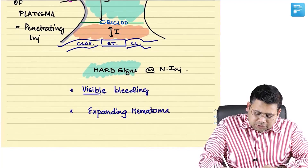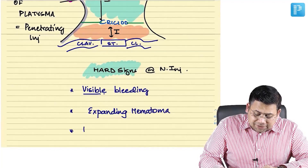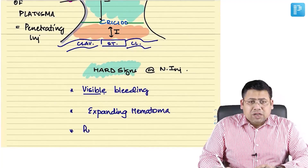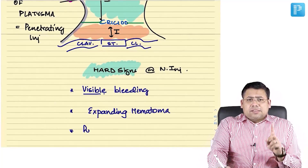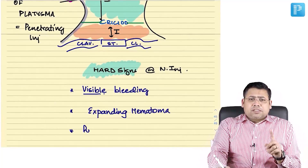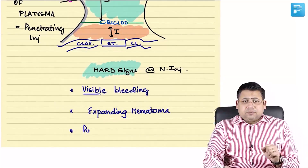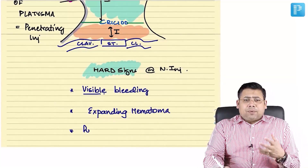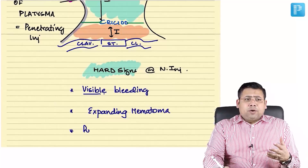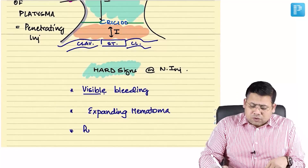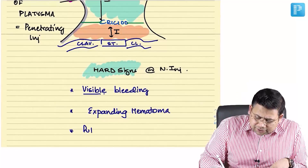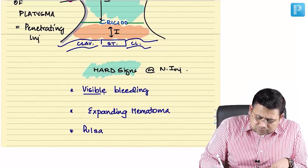The hard signs include: visible bleeding, expanding hematoma, and pulsatile hematoma. Pulsatile means the hematoma is associated with arterial injury — it may be pulsatile or could be due to a pseudoaneurysm.